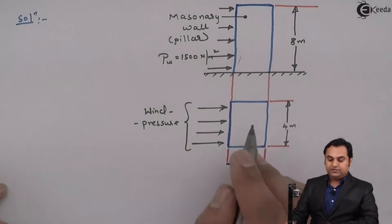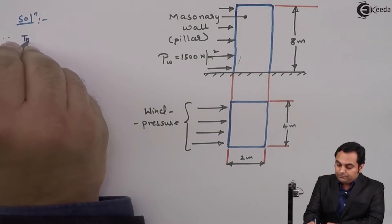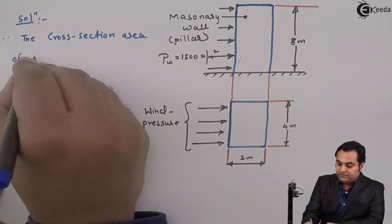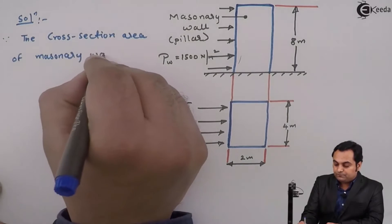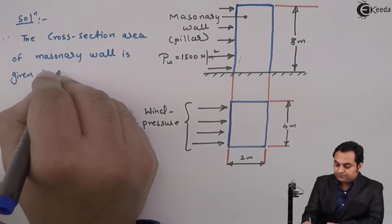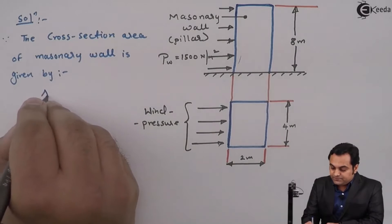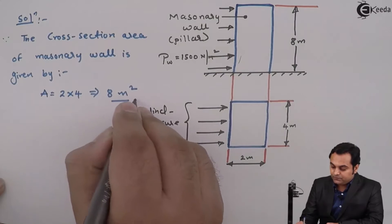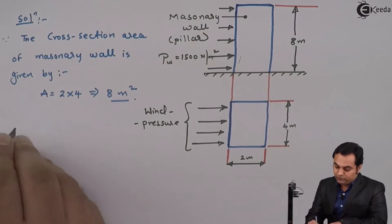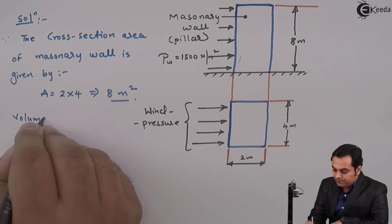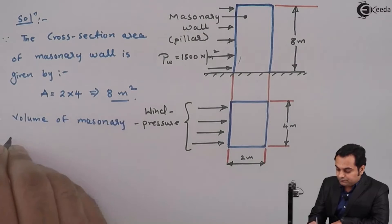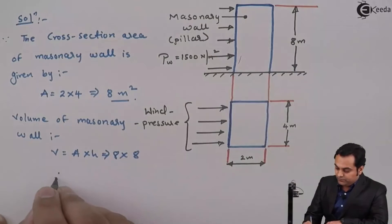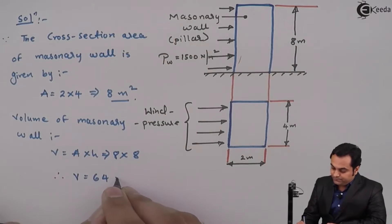First I'll find the cross-section area. The cross-section area of the masonry wall is 2 × 4 = 8 meter square. Next, the volume of the masonry wall equals area times height: 8 × 8 = 64 meter cube.